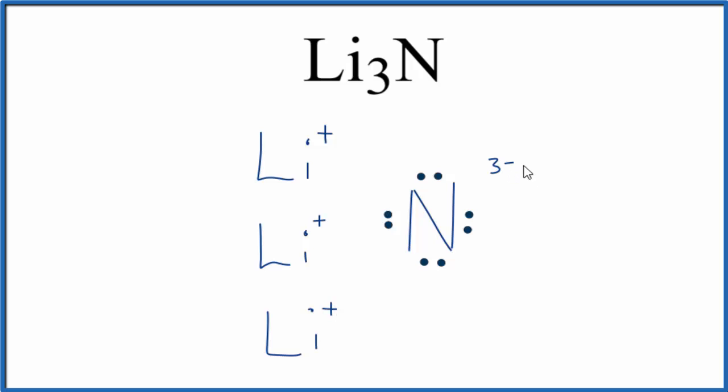To show that the electrons were transferred to the nitrogen, they're not being shared, they're now with the nitrogen, we need to put brackets around the nitrogen. Often you'll also see brackets around each of the lithiums.